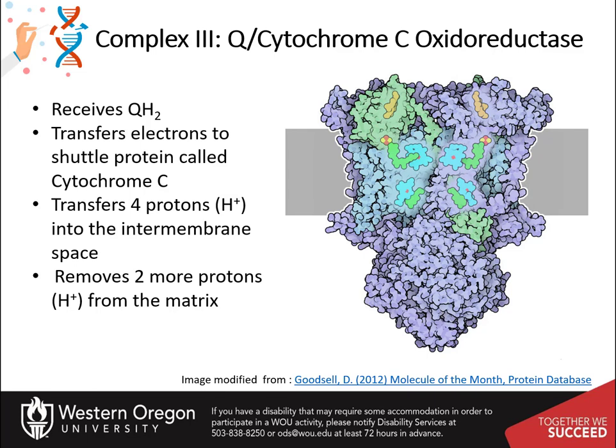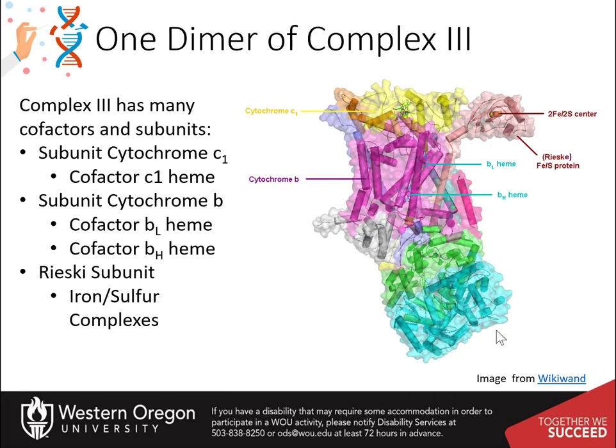In this process, it transfers four protons to the inner membrane space and takes two additional protons from the matrix. Here is one half of the complex 3 dimer, with the cofactors used to transport electrons listed. Structures of several different forms have been determined, and the 3D structures have revealed the location of the cofactors and two paths that electrons follow.